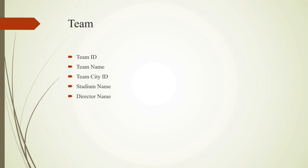League Teams Entity has attributes: league id, team id, start date, and add date. It has one domain relation with Team Entity. Team Entity has attributes: team id, team name, team city id, stadium name, and director name.